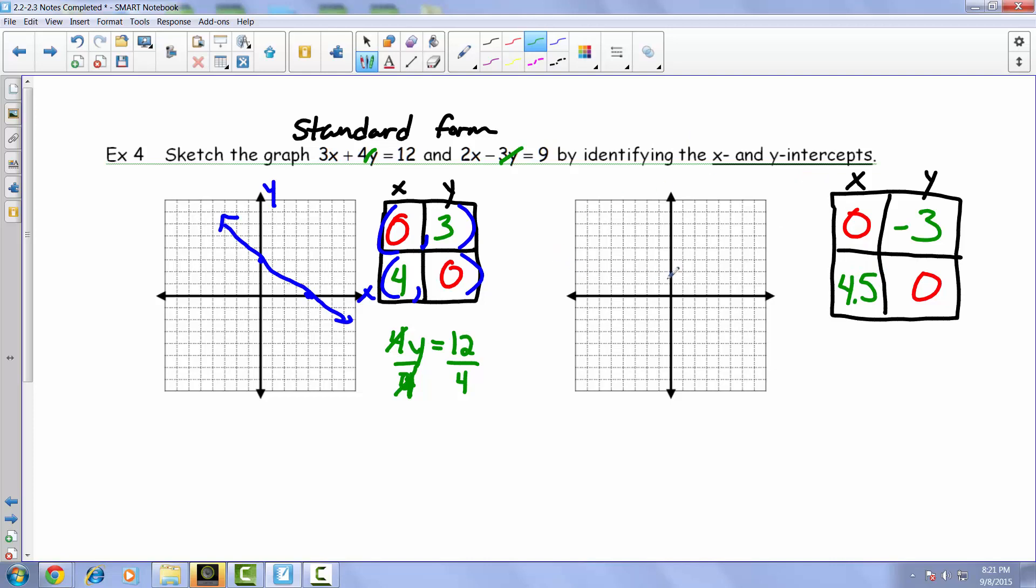Or if you wanted to say 4.5, it's the same thing. And again, what we've done here is we've actually created two different points. And we can just go ahead and graph these. So we have 0, negative 3. There he is.